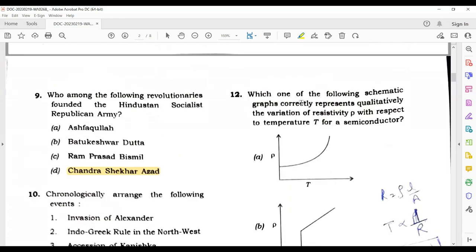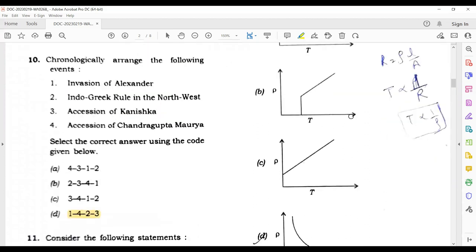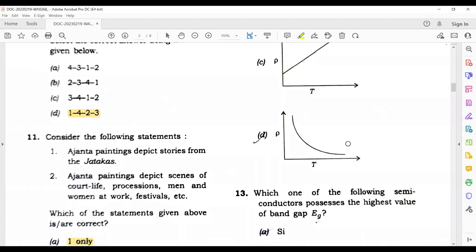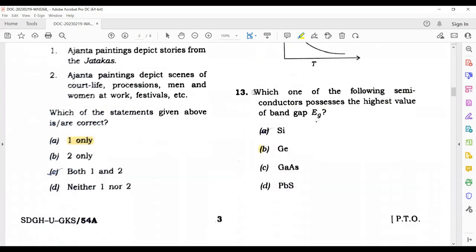Here they have asked which one of the following semiconductors possesses the highest value of band gap. If you studied semiconductors in class 12th, you would remember this. We noted in the paper that they asked chemistry from class 11th and 12th more. Silicon's band gap is around 1.12 electron volt, germanium is 0.7 electron volt, gallium arsenide is 1.42, and lead sulfide is around 0.4. Maximum is germanium, so the correct answer will be germanium.